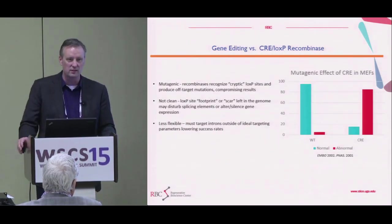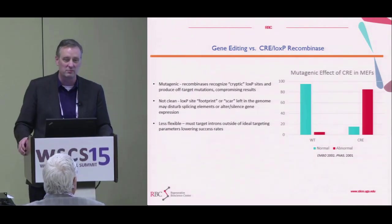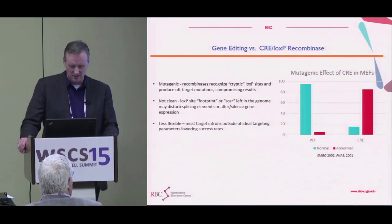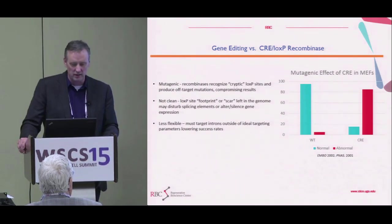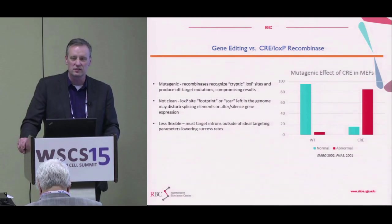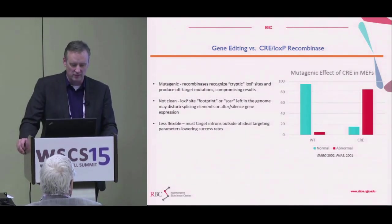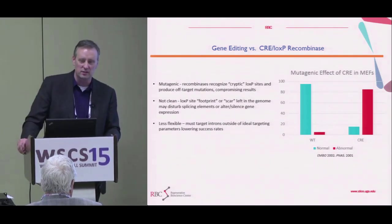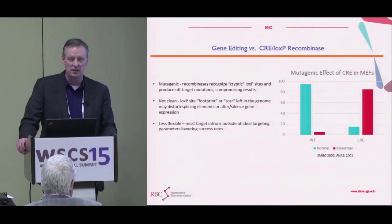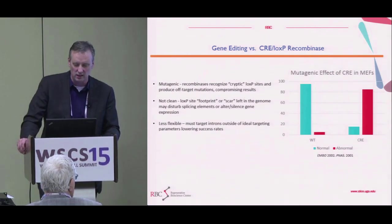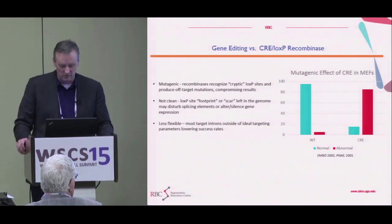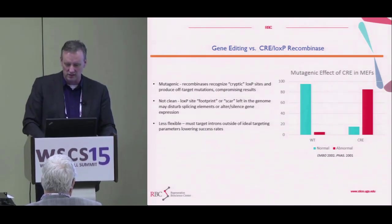There's been a lot of interest in gene editing, which has been around for some time — some people called it gene targeting in the past. Technologies range from homologous recombination to CRE-LOX recombination and recombinase-type systems, each with advantages and disadvantages. For instance, the CRE-LOX system is thought to have less flexibility than CRISPR and TALENs, and is less mutagenic than some of these new-generation gene editing technologies.